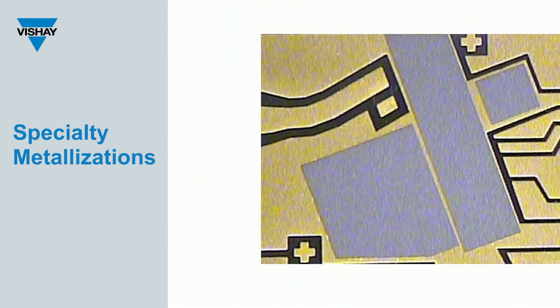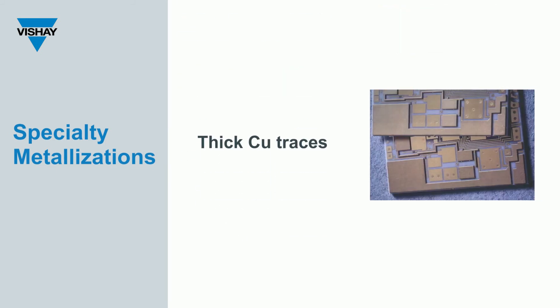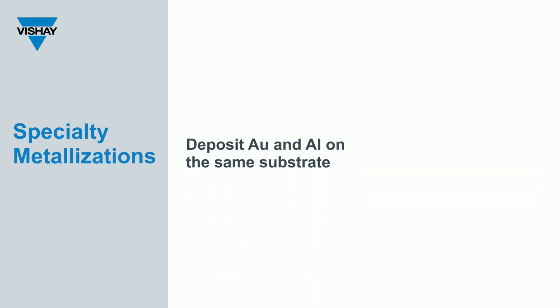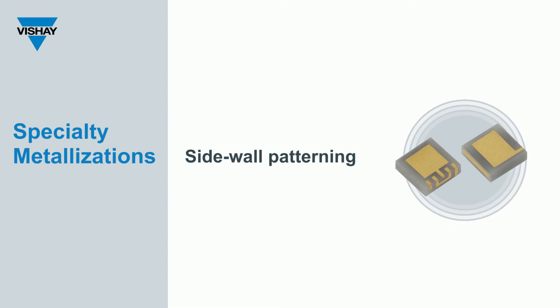SDF also offers special metallization options: a sputtered 80-20 eutectic gold tin solder, which is typically used as a mounting pad for laser diodes; a thick copper plating option, which is used for power handling and thermal management; the ability to deposit gold and aluminum on the same substrate, which can be useful when using gold and aluminum wires in the same assembly and in high temperature applications; and a sidewall patterning option, where material can be deposited on four sides at a time and allows attachment to the sidewall of the substrate.